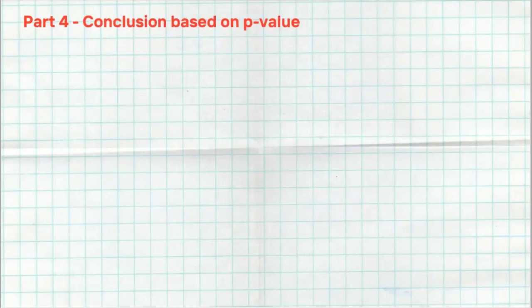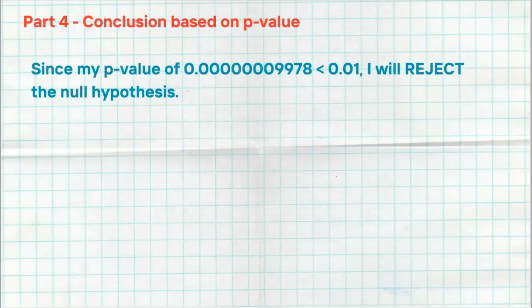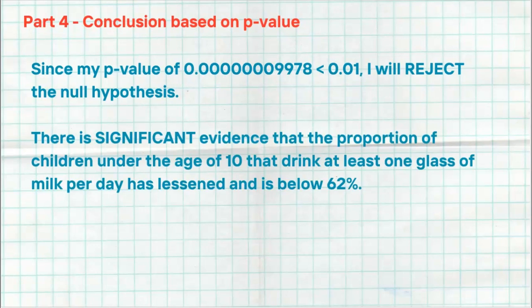All right, now it's time for our conclusion. All right, we want to make sure we make a conclusion based on our p-value. So I like to think of two statements here. The first statement is comparing the p-value to my alpha level and then making a decision. Since my p-value 0.000009978 is less than 0.01, I will reject the null hypothesis. Our sample should not have happened. Our sample or more extreme was extremely unlikely to occur if the null was true. And remember, as statisticians, we don't believe in these weird things. So when these weird things like this actually occur, it means that the null hypothesis is probably wrong. And that's why we're going to reject it. Now we want to come with our context. There is significant evidence that the proportion of children under the age of 10 that drink at least one glass of milk per day has lessened and is below 62%. So that's my nice conclusion I want to give in context.